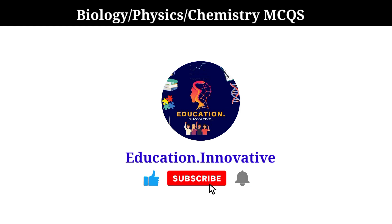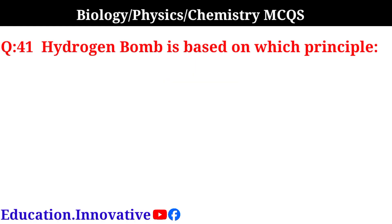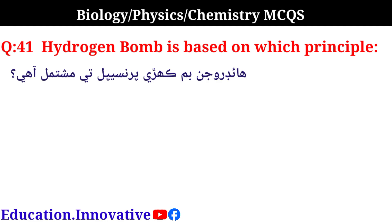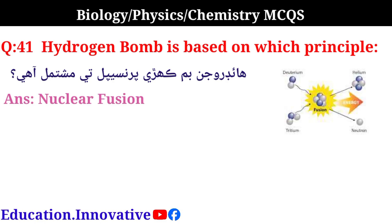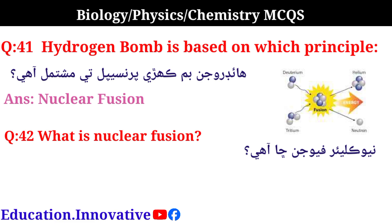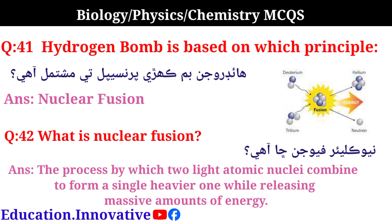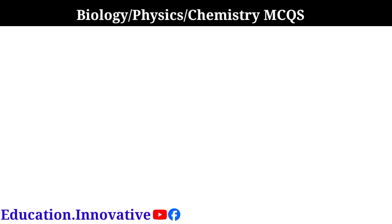Next question: A hydrogen bomb is based on which principle? The correct answer is nuclear fusion. Nuclear fusion is the process by which two light atomic nuclei combine to form a single heavier one while releasing massive amounts of energy.